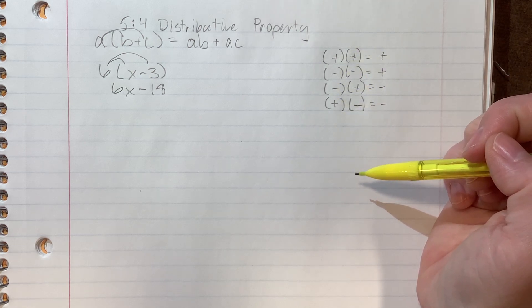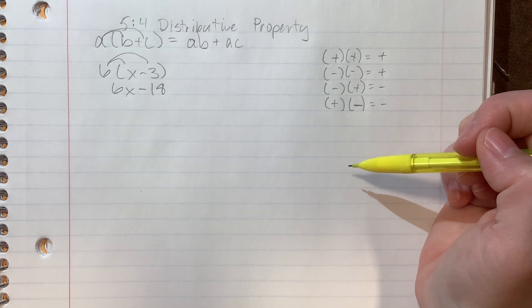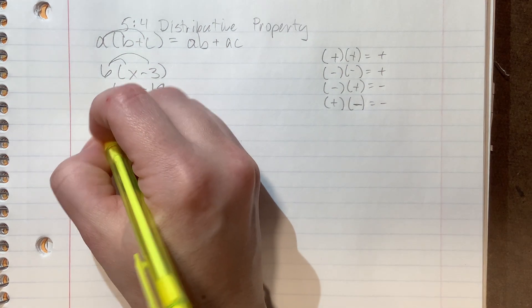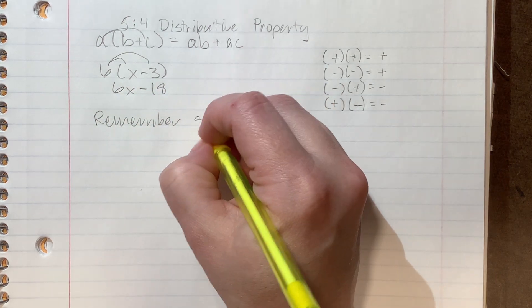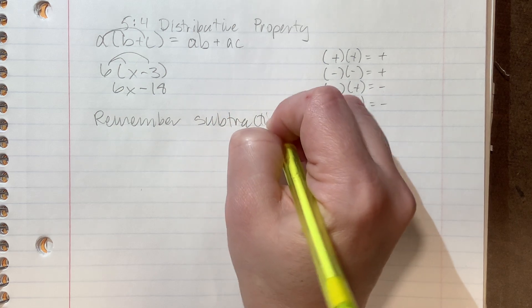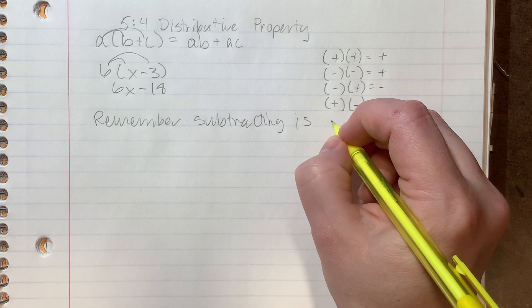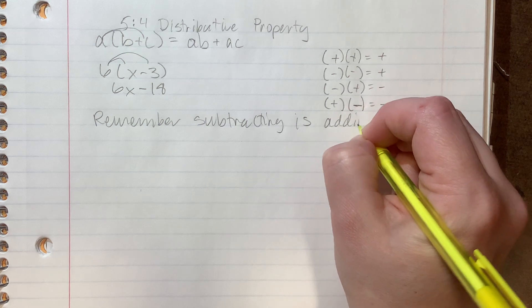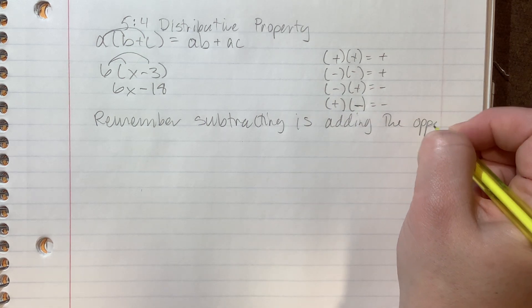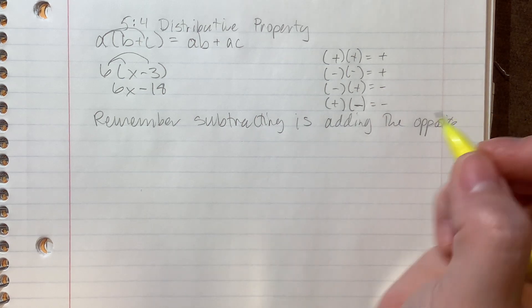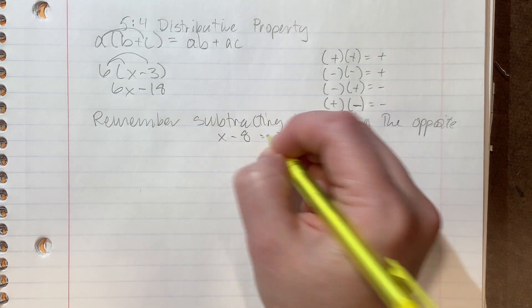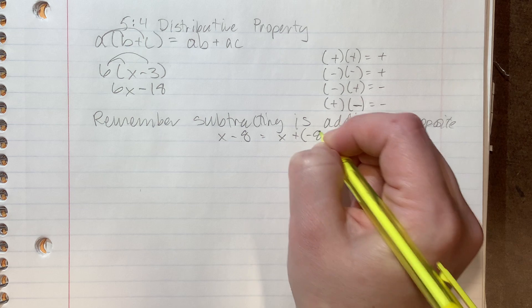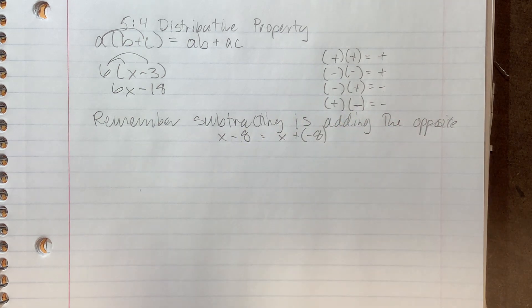Also, I don't know why I put this in here, but we'll write it down just in case. Also remember that subtracting is the same as adding the opposite. So what that looks like, remember we can rewrite something like x minus 8 is the same thing as x plus negative 8. Basically, we're just attaching that negative to the number there.